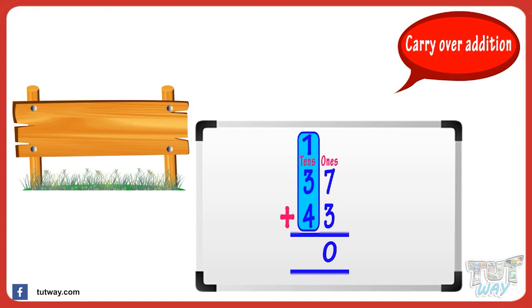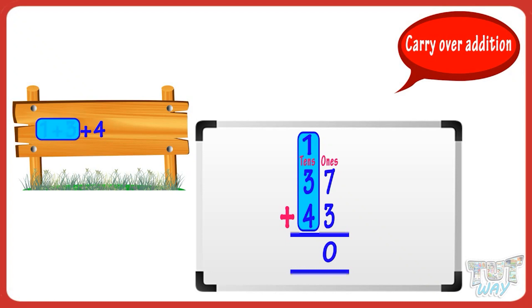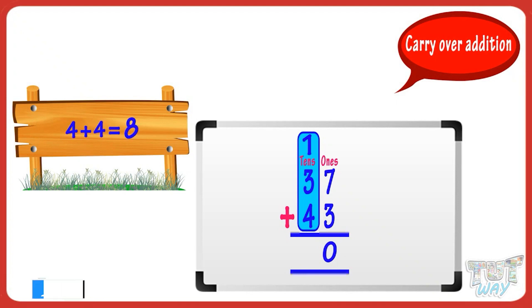Write the carried digit above the tens digit. Now add the three digits in the tens place: one, three, and four. One plus three equals four, and four plus four equals eight. Now write the sum of the tens digits below the tens digits.